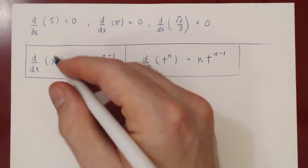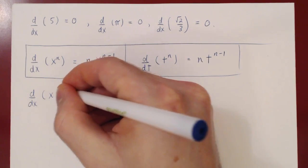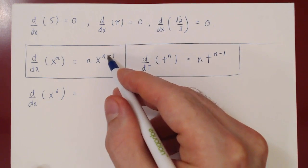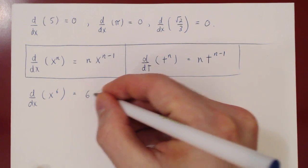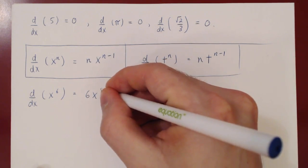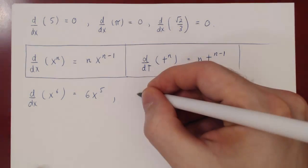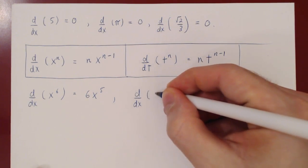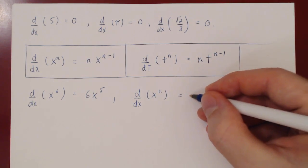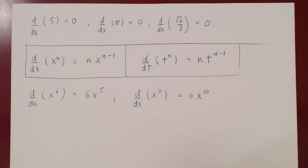Some examples. What's the derivative of x to the 6? The power rule says we bring the power down — so it's 6 times x to the 6 minus 1, which is 5. So it's just 6x to the 5. No limit needed. We could ask: what's the derivative of x to the 11? Bring 11 down, times x to the 11 minus 1, which is 10 — so 11x to the 10.